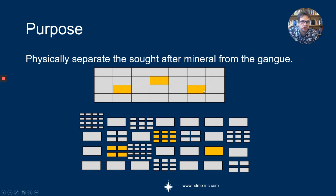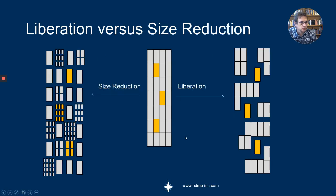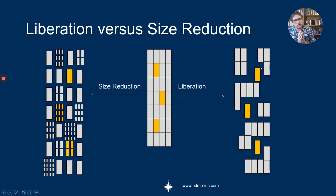There is a difference between liberation and just breakage. Sometimes you just want to break the particles smaller, and that's usually for downstream handling. But the main purpose of breaking the big rocks and making them smaller is to liberate the sought-after mineral species. There's a graphical illustration showing that sometimes it's just size reduction where you don't really care — you just want to make the stuff small enough, and incidentally, by implication, you are going to liberate the minerals that you are looking for.